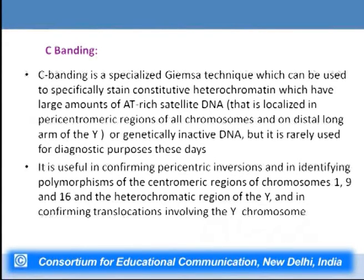C banding is a specialized Giemsa technique used to specifically stain constitutive heterochromatin containing large amounts of AT-rich DNA, localized in the pericentromeric region of all chromosomes, on the distal long arm of the Y chromosome, or genetically inactive DNA. It is useful in confirming pericentric inversions, identifying polymorphism of centromeric regions of chromosomes 1, 9, and 16, the heterochromatic regions of chromosome Y, and confirming translocation involving the Y chromosome.